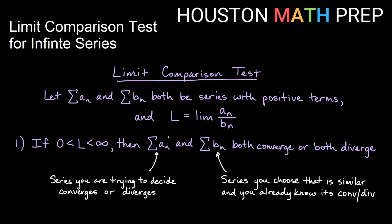Keep in mind that the sum of a sub n is the series you're trying to decide converges or diverges. The sum of b sub n is something that you choose that you already know, when you choose it, whether it converges or diverges. You'll need to know that.